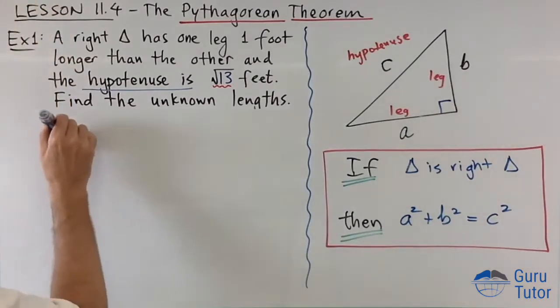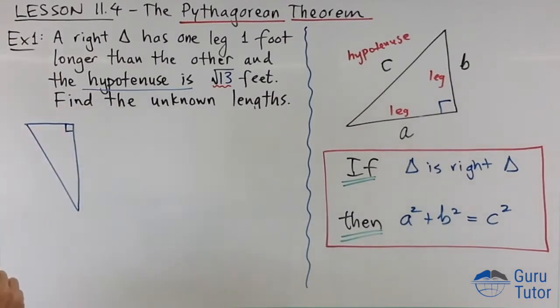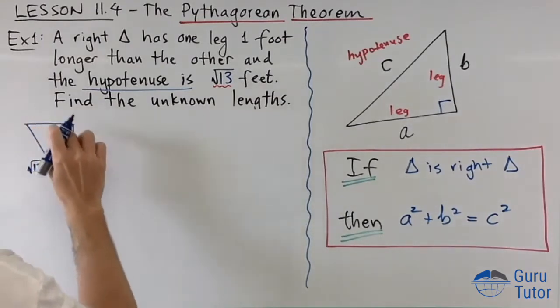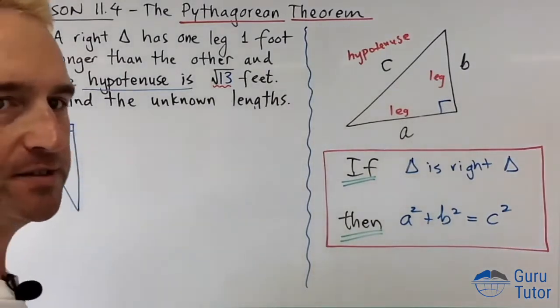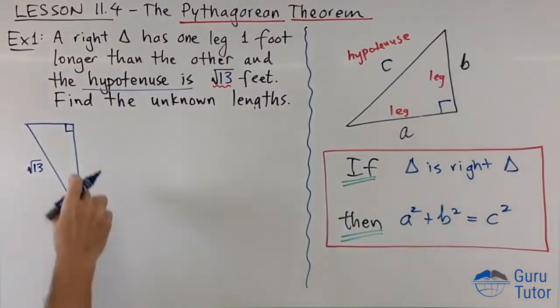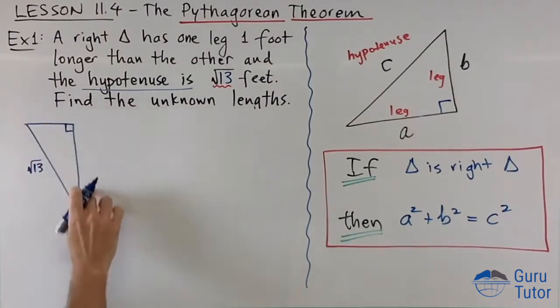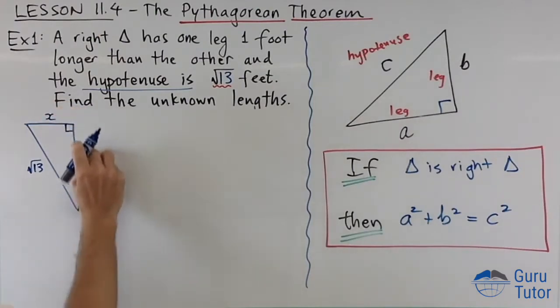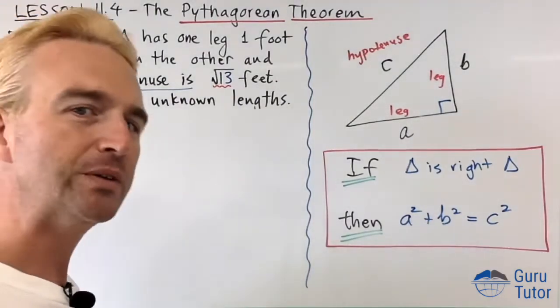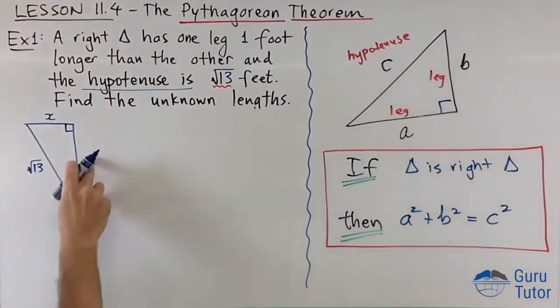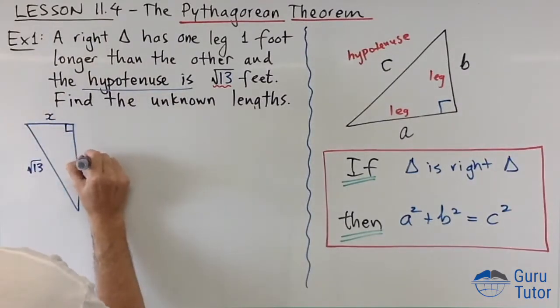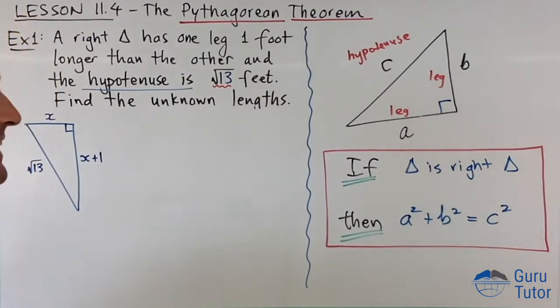So let's just draw this so we can visualize it. So we've got a right triangle, and we've got the hypotenuse. The hypotenuse is root 13, and we've got the two legs we don't know. Okay, but we have some information: one leg is one foot longer than the other. So when my diagram looks like this, one's a smaller leg, this one's a longer leg. We'll call this one x. If that's x, what can I call this one? Y? No, we don't need another variable. This is one foot longer than this one, so all it's going to be is just x plus one.